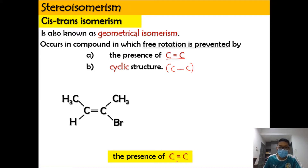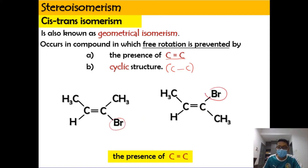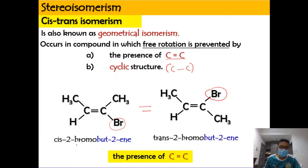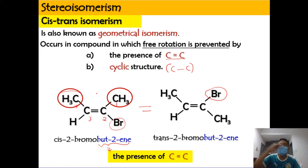Looking at the carbon-carbon double bond example: we have two structures with the same formula but different bromine positions — in one, bromine is placed upwards. This structure is called cis-2-bromo-but-2-ene because it has four carbons and bromine is attached at carbon number 2. It is the cis isomer because the CH3 and CH3 groups are on the same side.